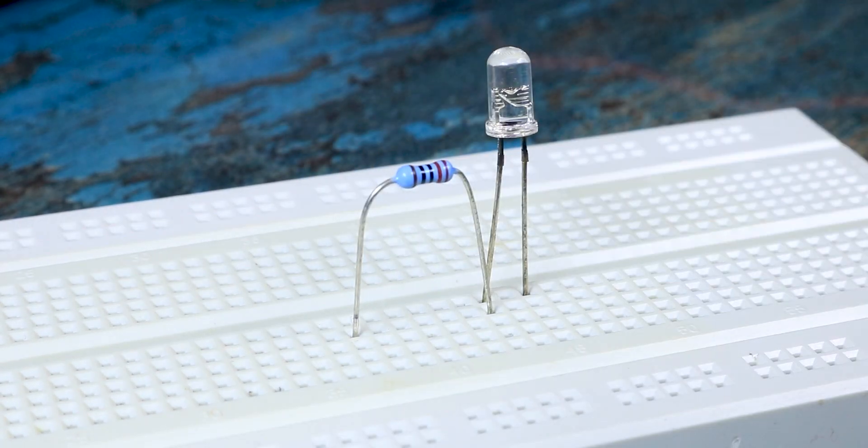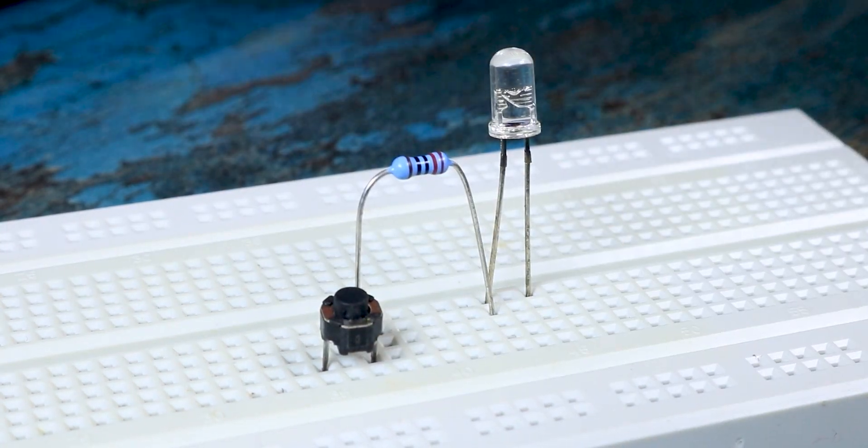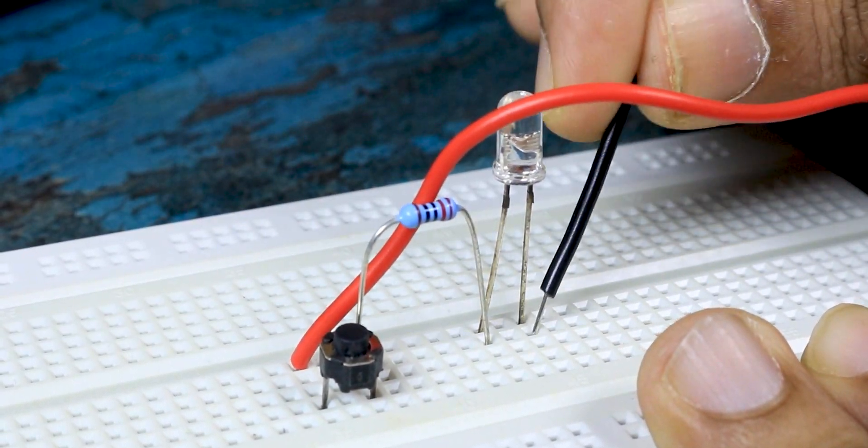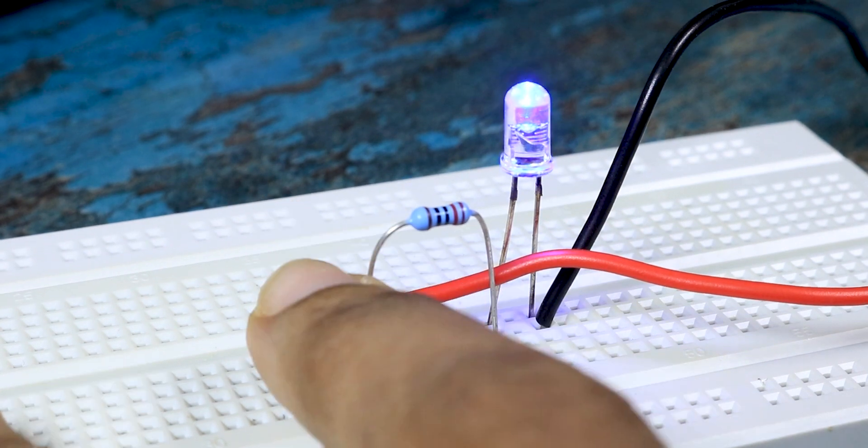Now if you wish to add a resistor you can simply add it like this, and let's also add a tactile switch. After giving it some power, if I press the switch LED will glow.